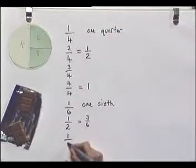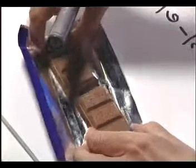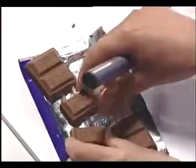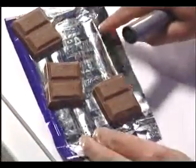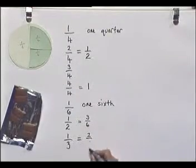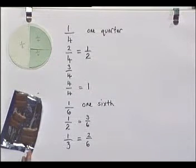But there's not just one cameraman, we've got two cameramen, so I need to share it actually between three of us. If I put my bar back together and share it between three, we're each going to get two pieces. So one third is exactly the same as two sixths.